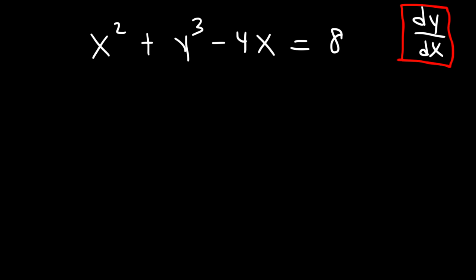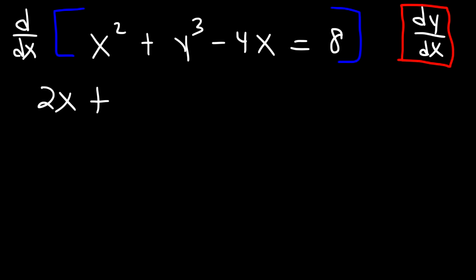What you need to do first is differentiate both sides with respect to x. So what is the derivative of x squared with respect to x? The derivative of x squared is simply 2x. Now what about a different variable like y cubed? What is the derivative of y cubed with respect to x? It's going to be 3y squared, using the power rule, times dy dx.